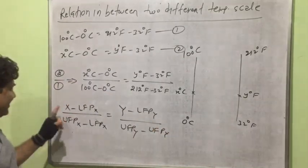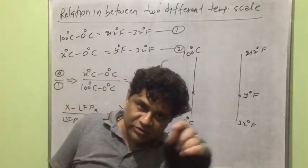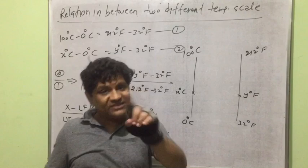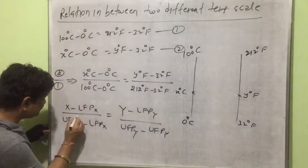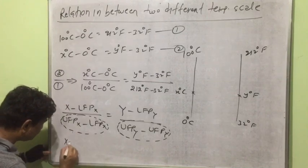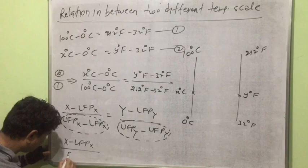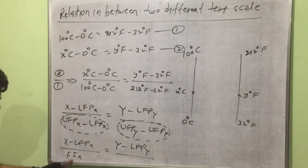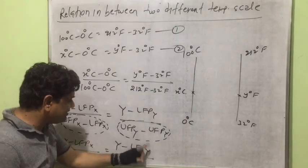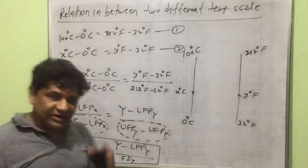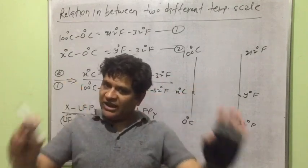X and Y are two different temperature scales. The difference between the upper and lower fixed points is the fundamental interval. So the master formula becomes: (X − lower fixed point on X scale) / (fundamental interval on X scale) = (Y − lower fixed point on Y scale) / (fundamental interval on Y scale). By this formula, we can find the relation between any two temperature scales.